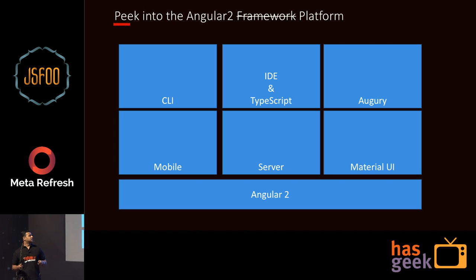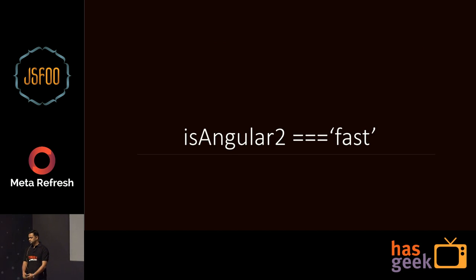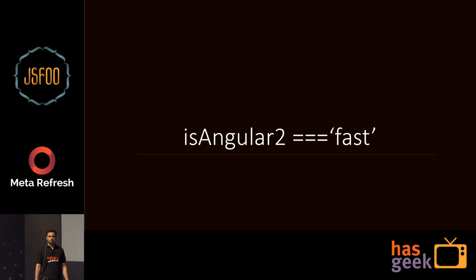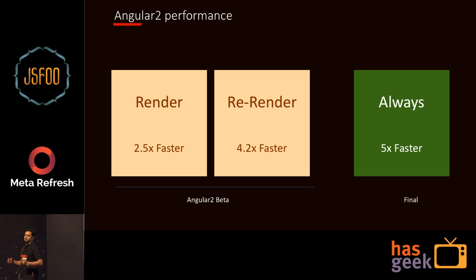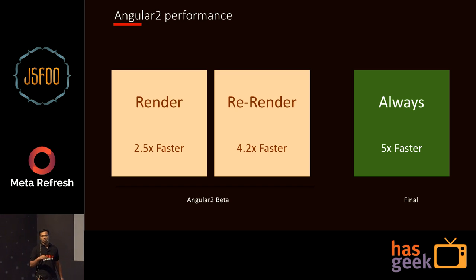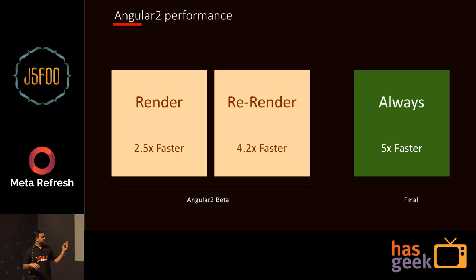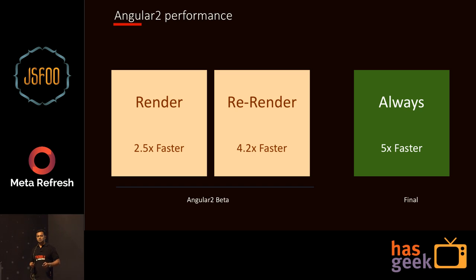There are also tools like Augury, which allow you to do debugging of your Angular apps. Having said that, is Angular 2 really fast? The Angular team says Angular 2 beta was about two and a half times faster than Angular 1, and about 4.2 times faster on reloads. By the time it reached final state, it's five times faster than Angular 1. So how are they trying to do that?